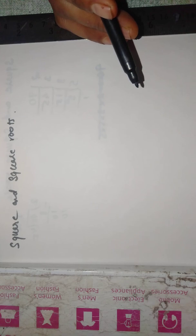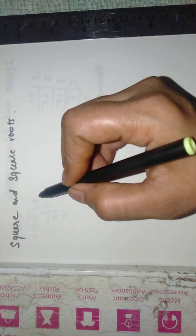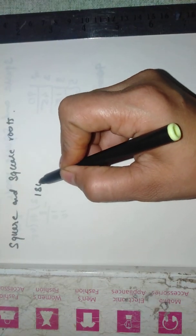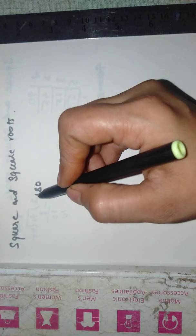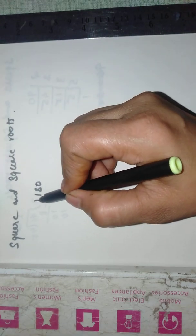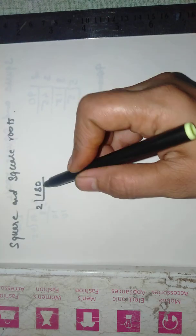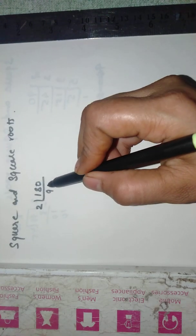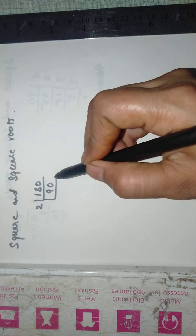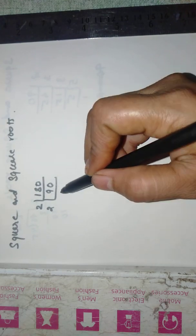By multiplication and division of the smallest required number. Let us take an example of 180. This 180 will find out the factors by prime factorization method. Dividing by 2 we will get 90. Again dividing by 2 we will get 45.